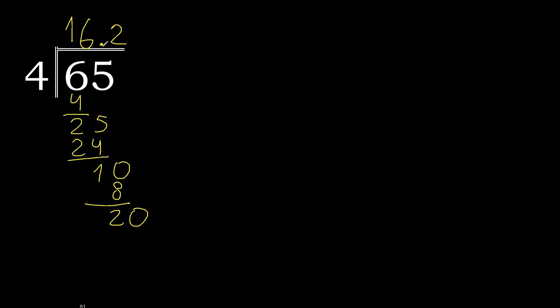The decimal point is here. Bring down: 20. 4 multiplied by 5 is 20 — 20 is not greater. Subtract: 0. Therefore finish.